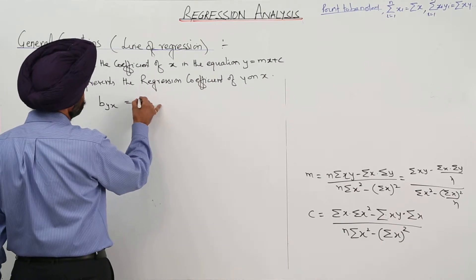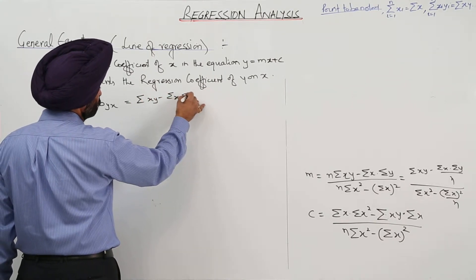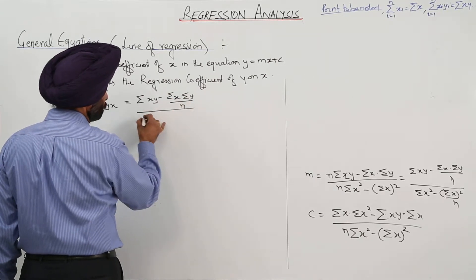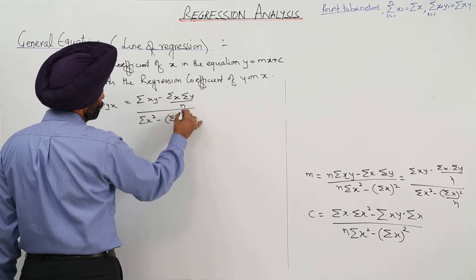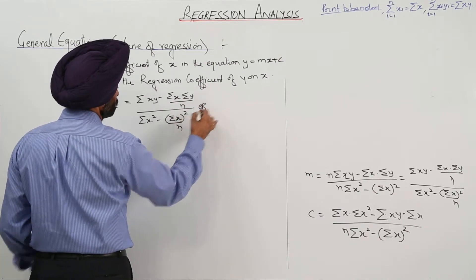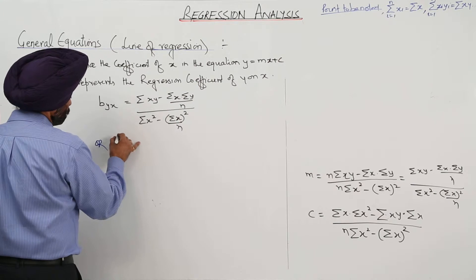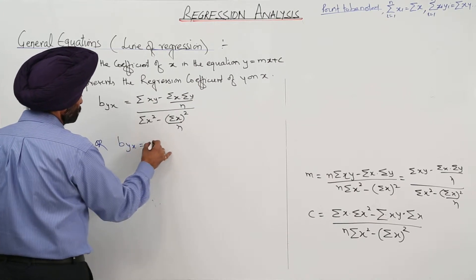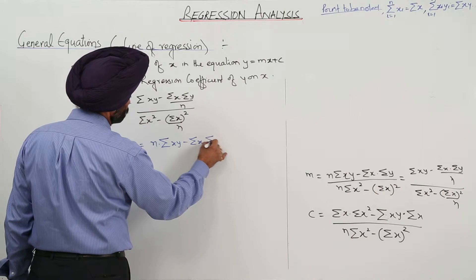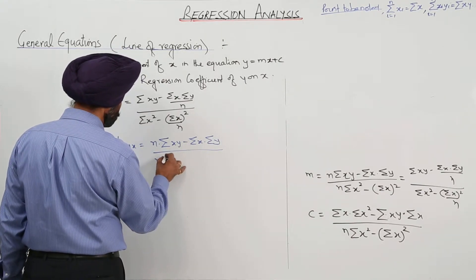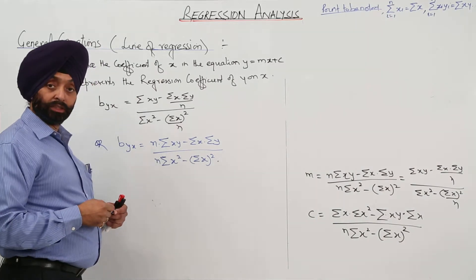To this, now we can write it: summation of x y minus summation of x dot summation of y upon n, whole upon summation of x square minus summation of x whole square upon n. Or we can write b y x equals n times summation of x y minus summation of x times summation of y upon n times summation of x square minus summation of x whole square.